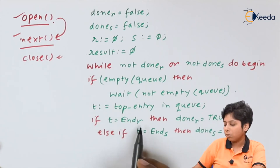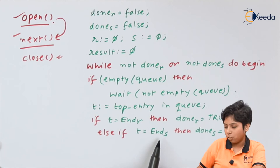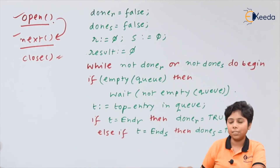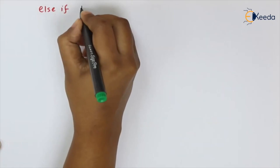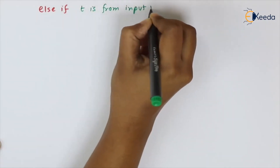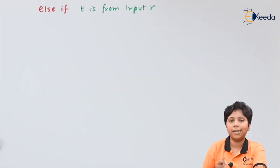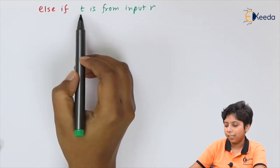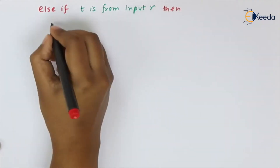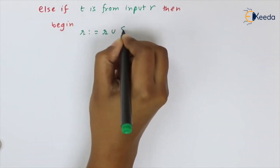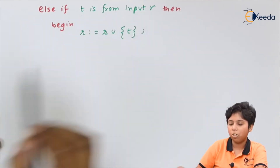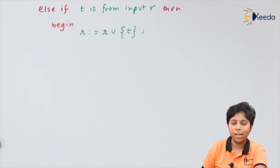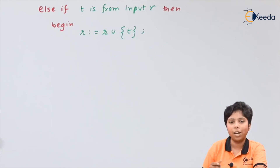If t is not the end of r, we check whether t equals the end of s. If it is the end of s, we set done_s to true, meaning we have processed all tuples from s. If neither r nor s has ended, we check if t is from input r — if so, we include t into the set of r, and the result considers r joined with s.